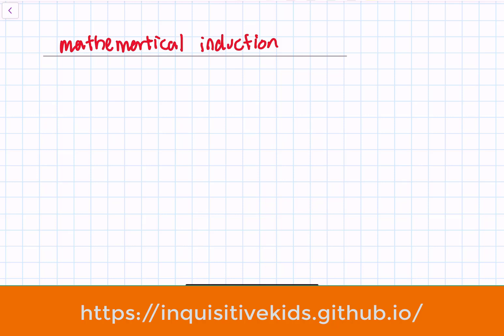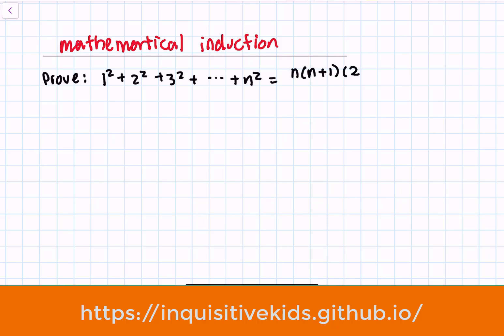To understand this better, let me give you an example. We want to prove that when you have 1 squared plus 2 squared plus 3 squared, all the way added up to the nth term squared, you get n times (n+1) times (2n+1) over 6.